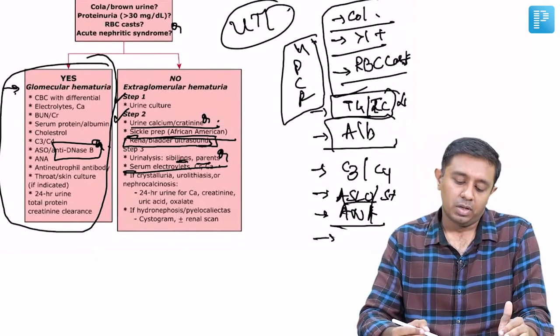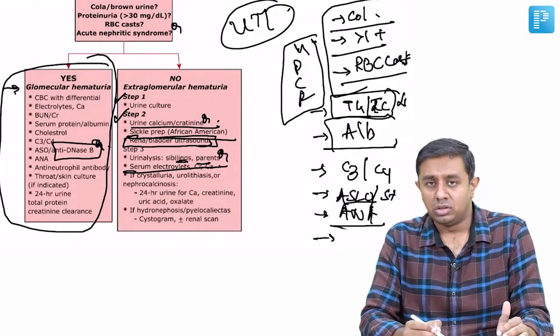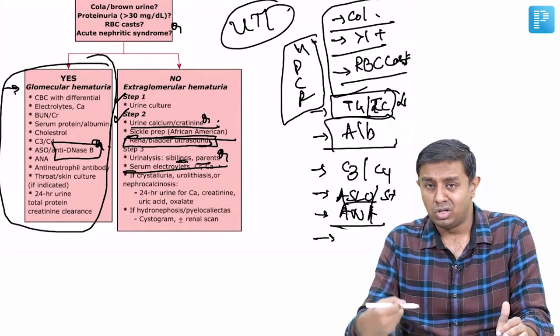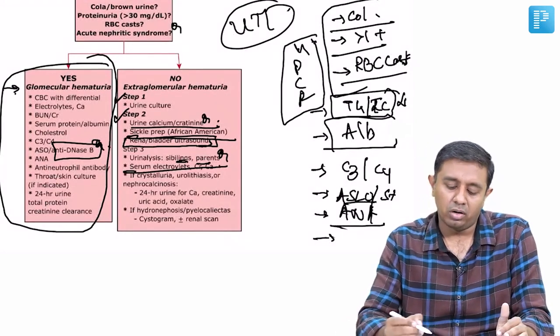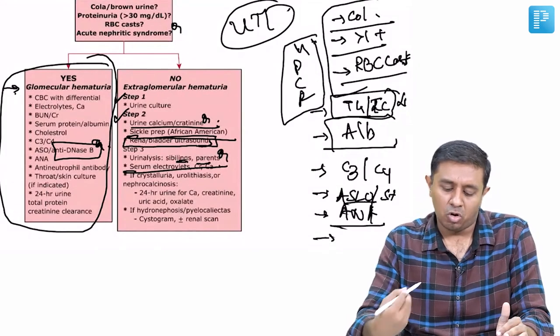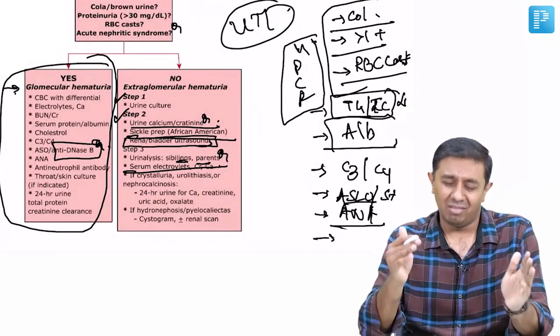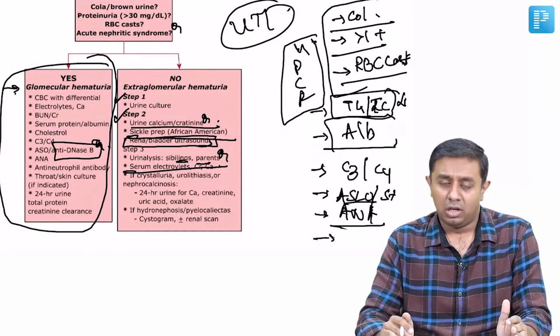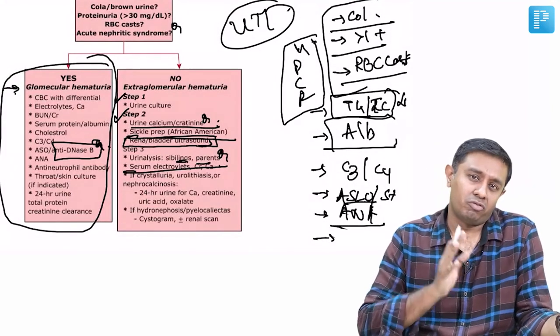If we are thinking about stones as one of the causes, then an evaluation of the stone will lead to 24-hour urine calcium, creatinine, oxalate, and uric acid as one of the important sets of evaluation. And last but not least, if there was presence of any flank mass or abdominal mass...